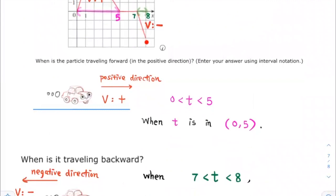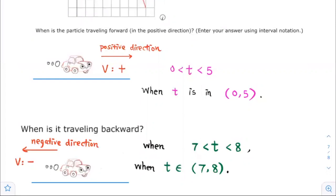So the particle is traveling backward when t is greater than 7 and less than 8. Using interval notation, we can write that when t is in the open interval from 7 to 8.